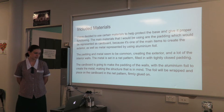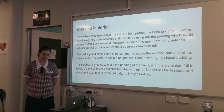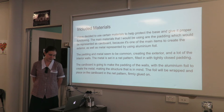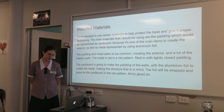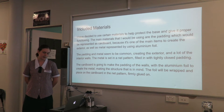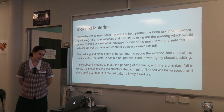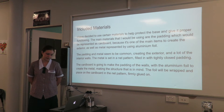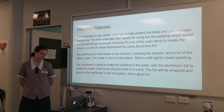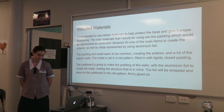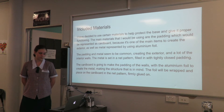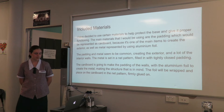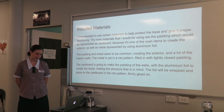Including Materials: I have decided to use certain materials to help protect the base and give it proper functioning. The main materials are padding, represented as cardboard, as it's one of the main items to create an exterior, as well as metal represented using aluminum foil. The padding and metal are common in creating the exterior, and a lot of the interior walls have metal set in a net pattern filled with tightly closed padding. The cardboard will form the padding of the walls, with the aluminum foil creating the metal, and the foil will be wrapped and placed in the net pattern, firmly glued.